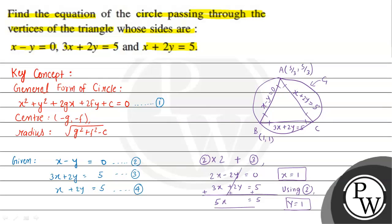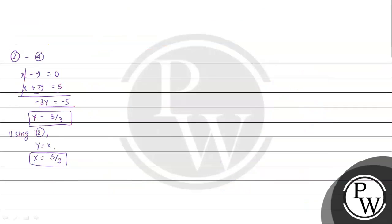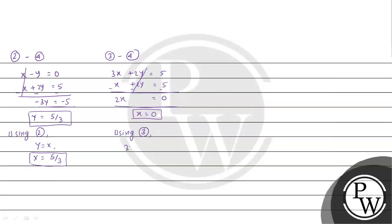Now solving equation 3 and equation 4 to get vertex C. Subtracting equation 4 from equation 3: (3x plus 2y) minus (x plus 2y) equals 5 minus 5. The 2y terms cancel, giving 2x equal to 0, so x equals 0. Substituting into equation 3: 3(0) plus 2y equals 5, so y equals 5 by 2.